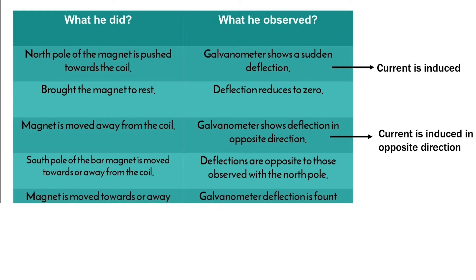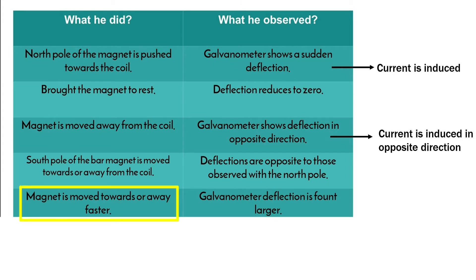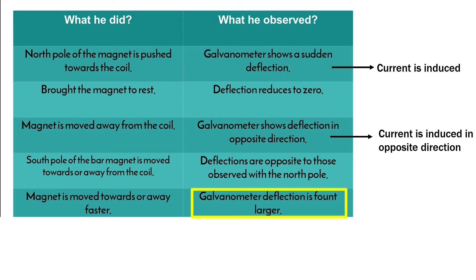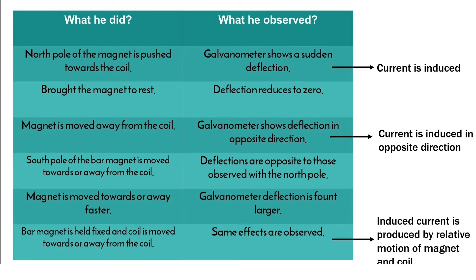Then he moved the bar magnet faster towards or away from the coil and observed that the galvanometer deflection is much larger — that is, the induced current is larger when the bar magnet moves with faster velocity. He also fixed the bar magnet and moved the coil towards or away from it, and observed the same effects as before.